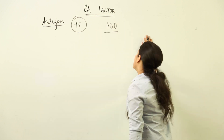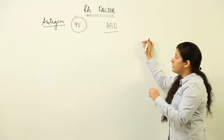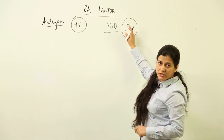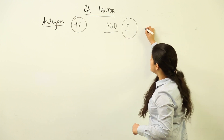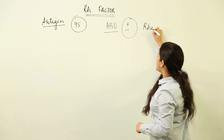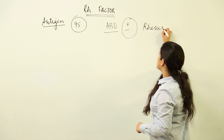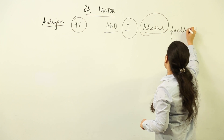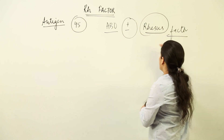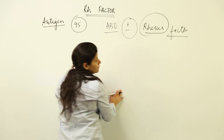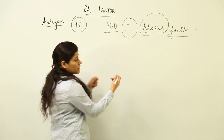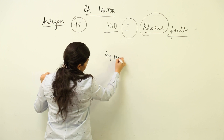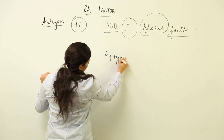Out of those 45, we often deal with one: the ABO system — A, B, AB, or O blood group — and we add positive or negative to it. Now, this positive or negative is what it is: the Rhesus factor.